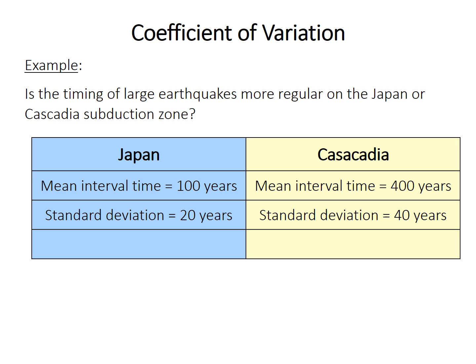But if we calculate the coefficient of variation, standard deviation divided by mean, we find that Japan is 0.2, 20 divided by 100, and Cascadia is 0.1. So we'd actually make the opposite conclusion, that the earthquake timing is actually more variable in Japan than the time between earthquakes. So this is an example where the mean differs, and we might want to use coefficient of variation. You've got to be a little careful sometimes.